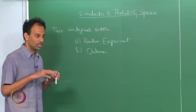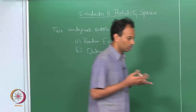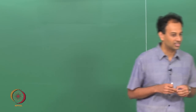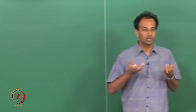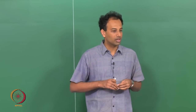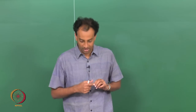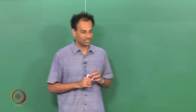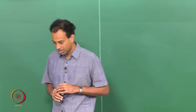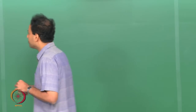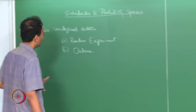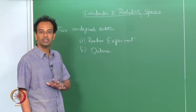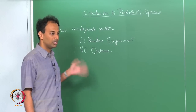Probability begins with two entities which you do not question or try to define. There is a random experiment — it is an experiment whose outcome is random — and it has an outcome. Every time you perform this random experiment there is an outcome. You cannot say anything more about these terminologies. Everything in probability that is defined is in terms of these entities, and we build up from here.